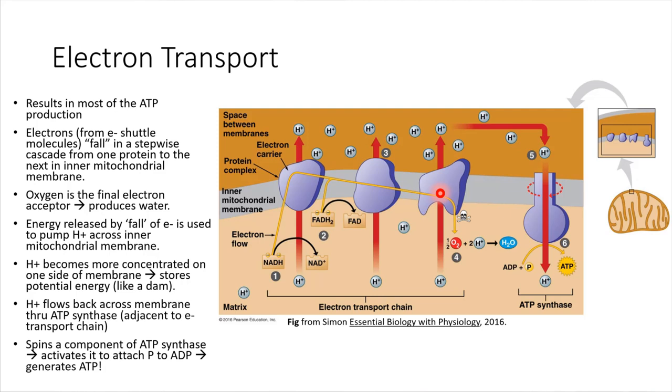Each time the electron gets handed off, it loses just a little bit of energy. That's why they made the line kind of drop down. The electron is losing energy.